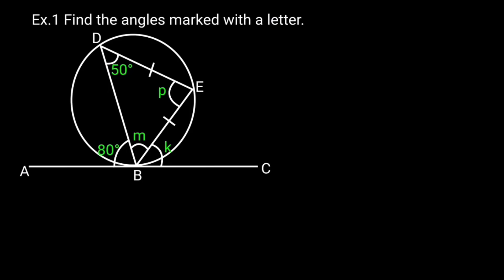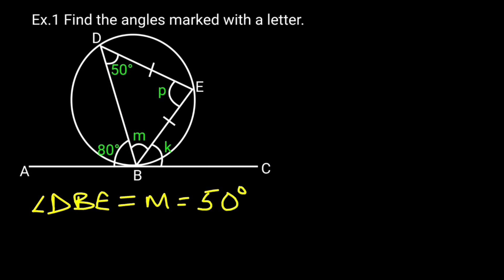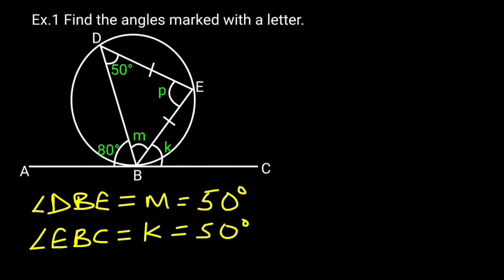Example 1: Find the angles marked with a letter. Solution: Angle DBE, which is M, equals 50 degrees. Reason: base angle of isosceles triangle. Angle EBC, which is K, equals 50 degrees. Reason: angle in alternate segment. Angle DEB, which is P, equals 80 degrees. Reason: also angle in alternate segment.